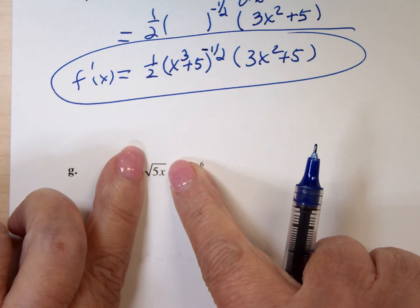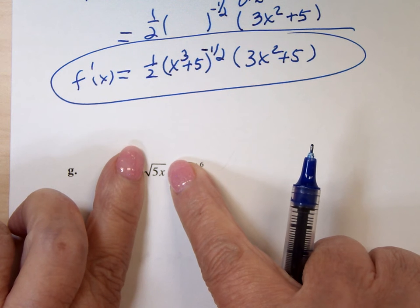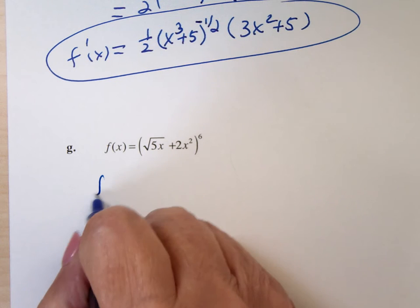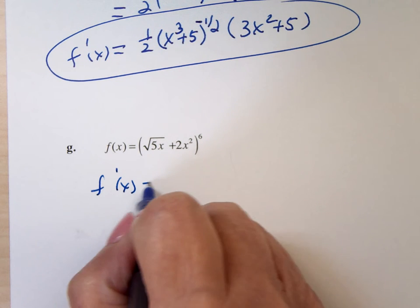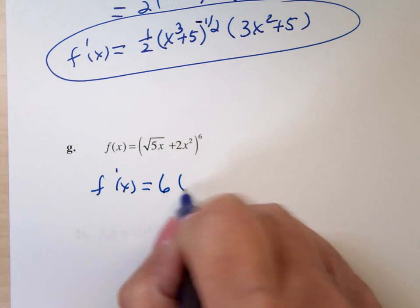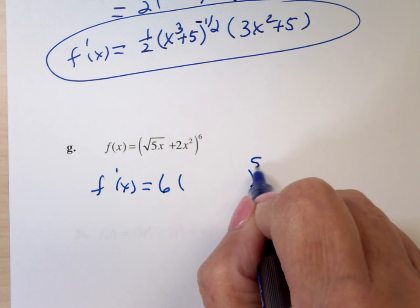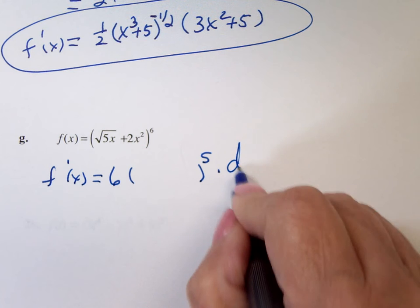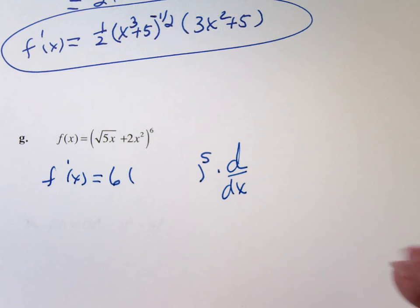Does 5X have a derivative? What's the derivative of 5X? 5. So he has a blob, and the blob is 5X. So here we go, F prime of X is 6 times the blob to the fifth times the derivative of the blob.